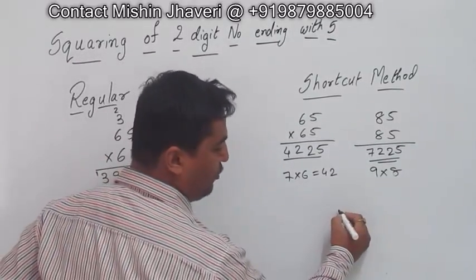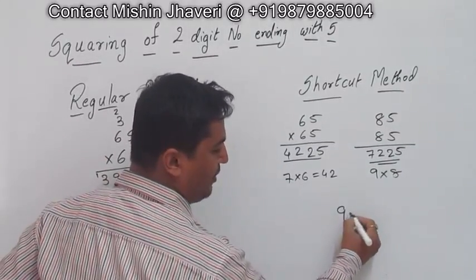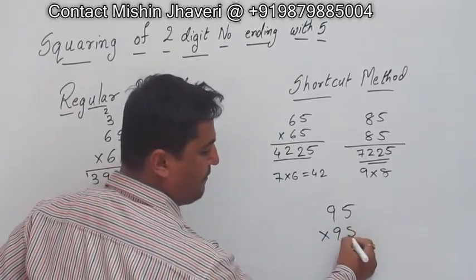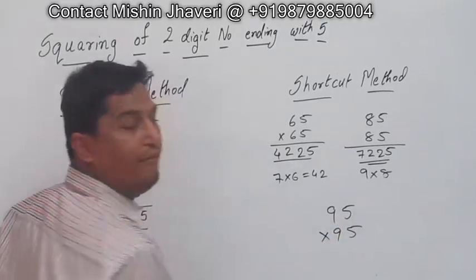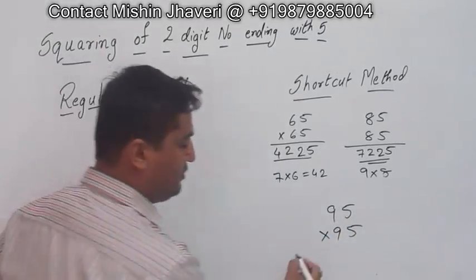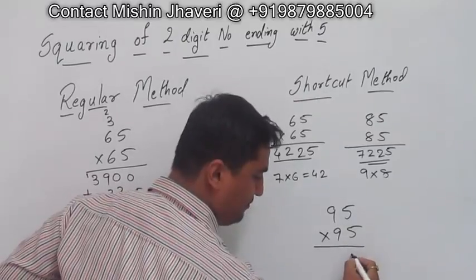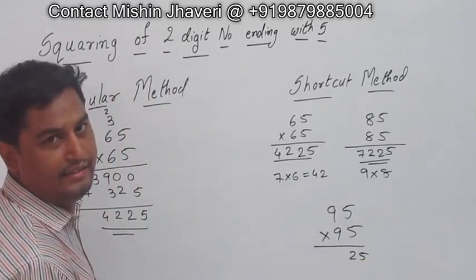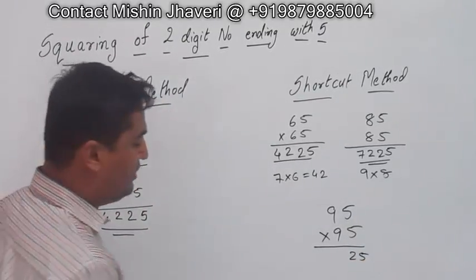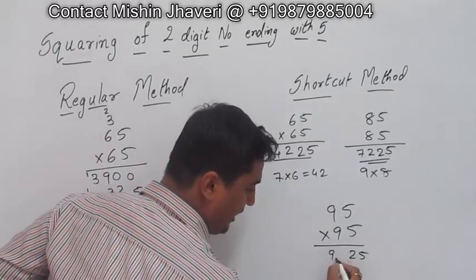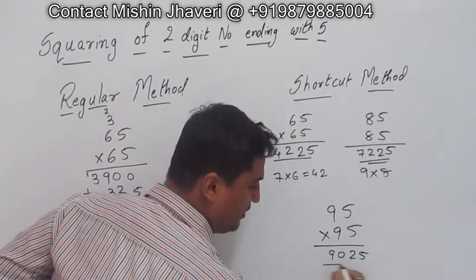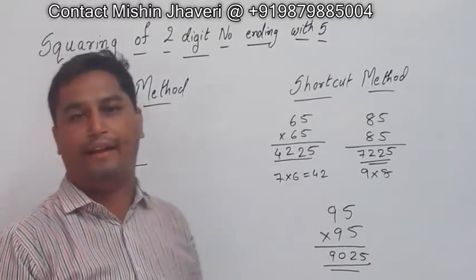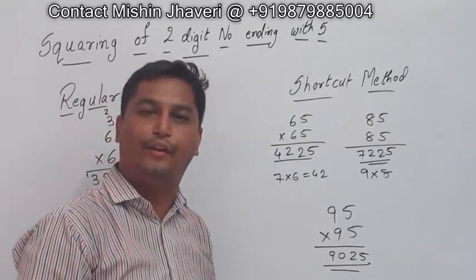Again, I am doing one more example: 95 into 95. Write 25 straight away. The next number to 9 is 10. 10 nines are 90. So my answer is 9025. Thank you.